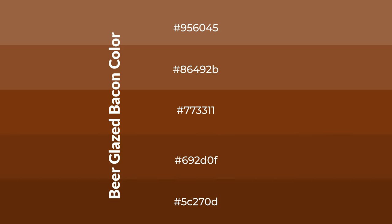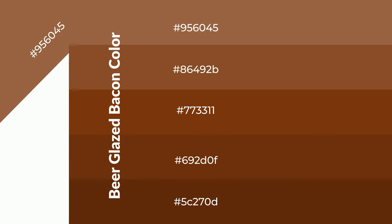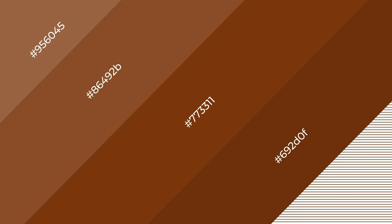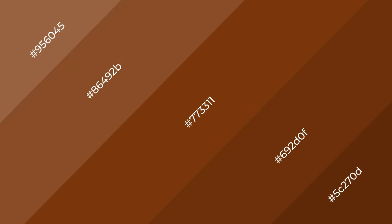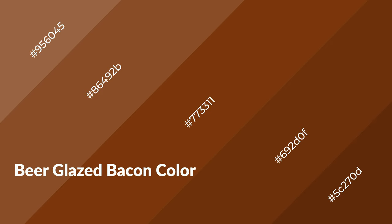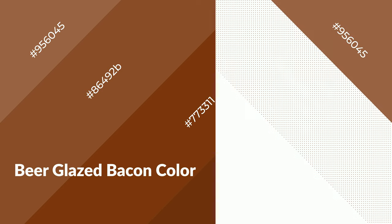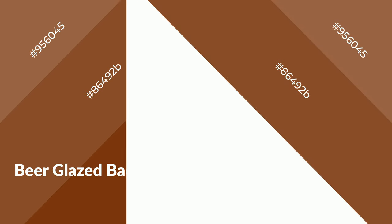To generate shades of a color, we add black to the color. Shades are used in patterns, 3D effects, and layers, and they create depth and drama. Beer glazed bacon is a warm color and it emits cozier and active emotions. Warm colors are symbols of warmth.